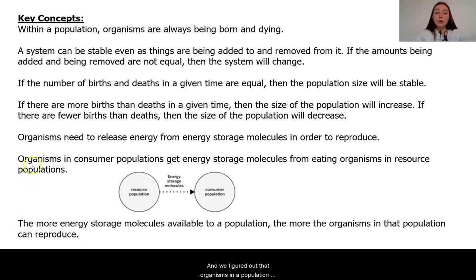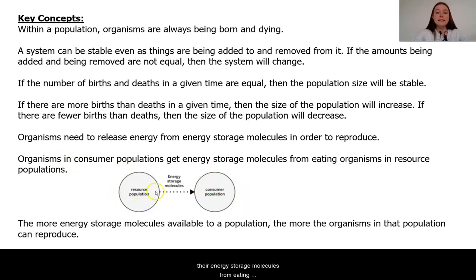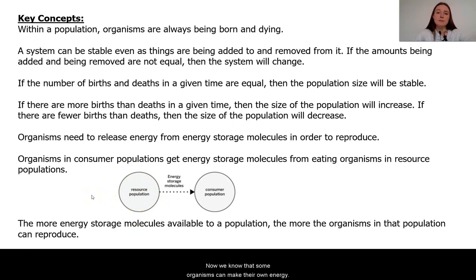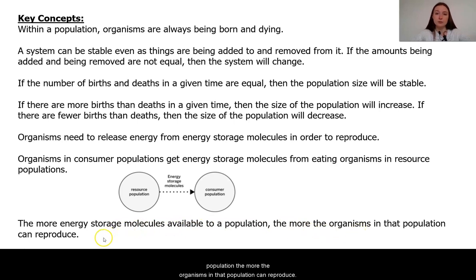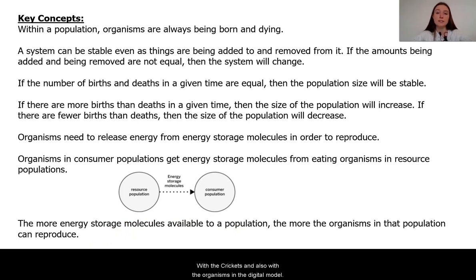We figured out that organisms in a population need to release energy from energy storage molecules in order to reproduce — in other words, give birth. Organisms in consumer populations get their energy storage molecules from eating resource populations. Most organisms need to eat to get these energy storage molecules. The more energy storage molecules available to a population, the more the organisms in that population can reproduce. We saw this with the yeast, with the crickets, and with the organisms in the digital model.